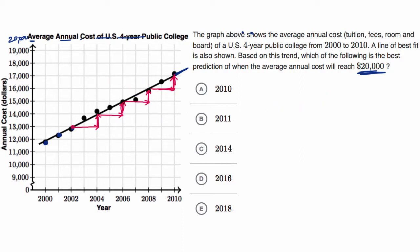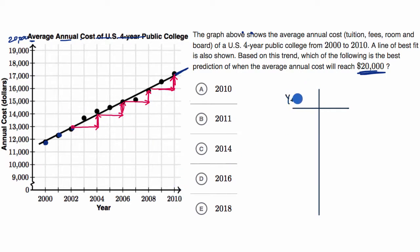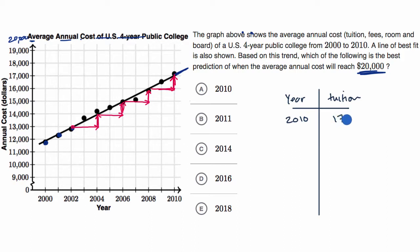One way to think about it is to make a table to continue the extrapolation. So we have year and tuition. We know that in 2010, the tuition is about $17,000. And this line of best fit predicts that every two years that pass, tuition will go up by $1,000.